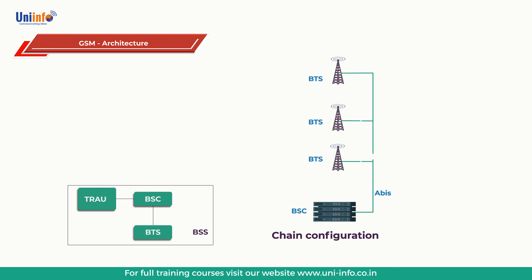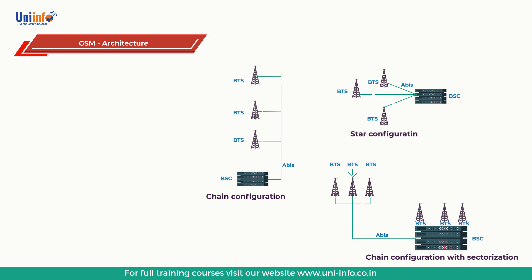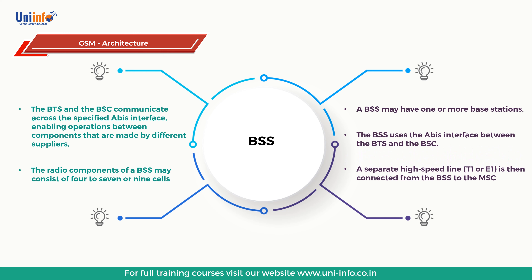Our next topic is BSS, base station subsystem. The base station subsystem is composed of two parts: first, the base transceiver station (BTS); second, the base station controller (BSC). The BTS and BSC communicate across the specific ABIS interface, enabling operations between components made by different suppliers. The radio components of a BSS may consist of 4 to 7 or 9 cells. A separate high-speed line T1 or E1 is then connected from the BSS to the mobile MSC.